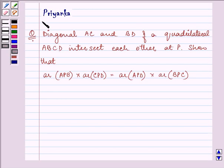Hi, and how are you all today? I'm Priyanka. The question says diagonal AC and BD of a quadrilateral ABCD intersect each other at P. Show that area of APB into area of CPD is equal to area of APD into area of BPC.